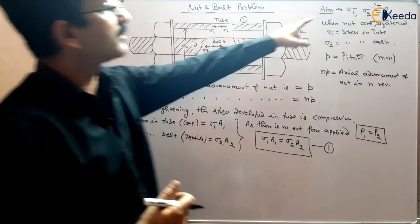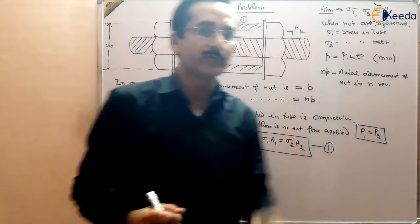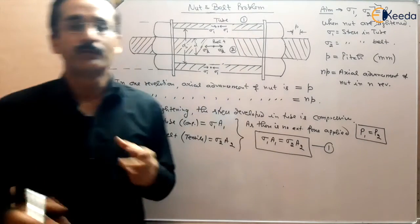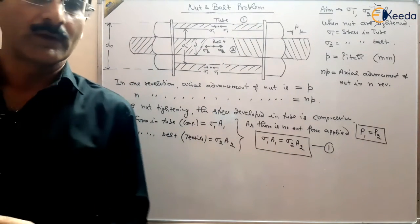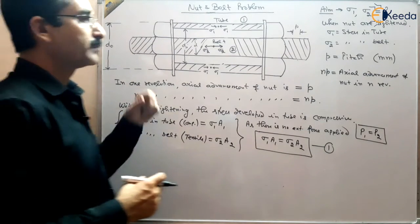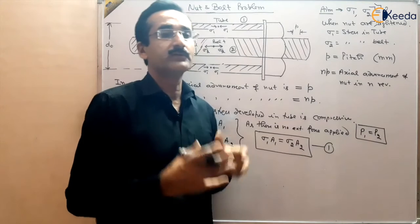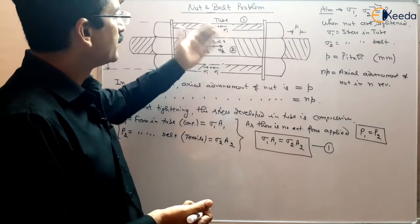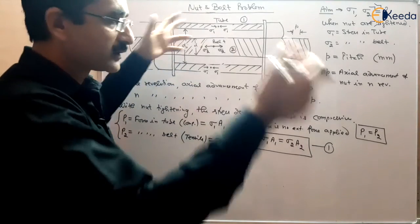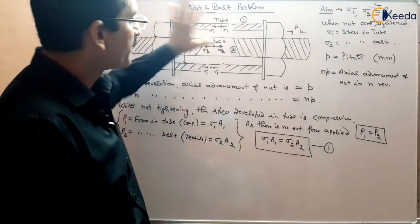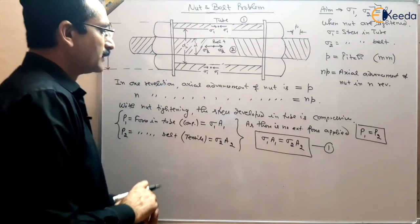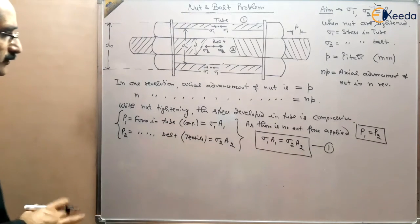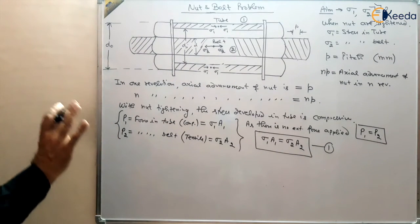So this is the first equation for the analysis of stress — for finding sigma 1 and sigma 2. Two unknowns are there, so two equations are required. Equation 1 states that the force developed in the tube due to nut tightening is equal to the force developed in the bolt: sigma 1 A1 = sigma 2 A2, since there is no external force and both forces are equal and opposite in nature.